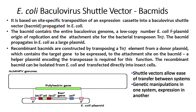In the case of bacmid, it is based on site-specific transposition of the expression cassette in the baculovirus shuttle vector propagated in E. coli. The bacmid contains the entire baculovirus genome, a low-copy-number E. coli F plasmid origin of replication, and an attachment site for the bacterial transposon Tn7. The recombinant bacmid is constructed by transposing the Tn7 element from the donor plasmid, which contains the target gene, to the attachment site of the bacmid. A helper plasmid containing the transposase is required. The recombinant bacmid can be isolated from E. coli and transfected directly into insect cells.